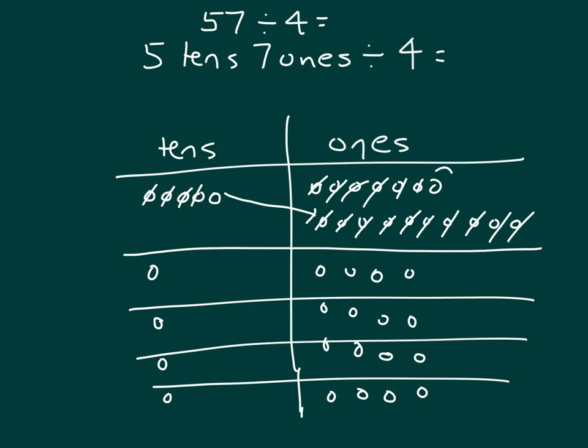So this 1 right here, don't forget it. It's a remainder. So, it's 1 ten, 4 ones, with the remainder of 1. So, in this case, that's 1 ten and 4 ones is 14, with the remainder of 1.